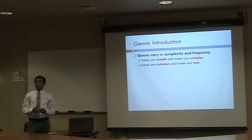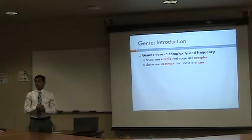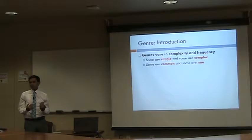Genres vary in complexity and frequency. Some are simple, like a letter written to a friend; some are very complex, like a research paper. Some are very common, like a receipt from Walmart — still a genre because it has specific components. But some are rare, like a speech by the president after being elected.